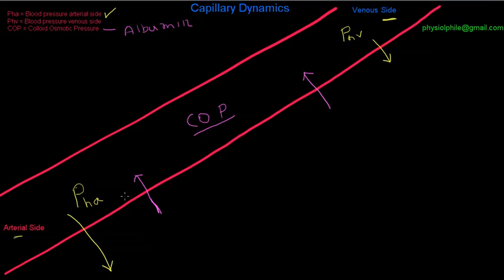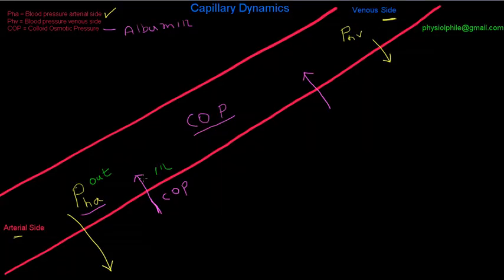If you look at what's happening with these pressures on the arterial side, the hydrostatic pressure — the blood pressure — is bigger than the colloid osmotic pressure. The colloid osmotic pressure is pulling fluid in, and the hydrostatic pressure is pushing fluid out, but the force pushing out is greater. So you have a net outward pressure: the sum of the hydrostatic pressure and the colloid osmotic pressure is pushing fluid out.